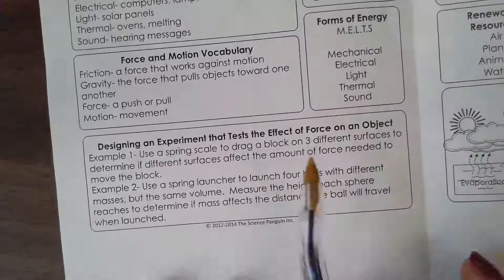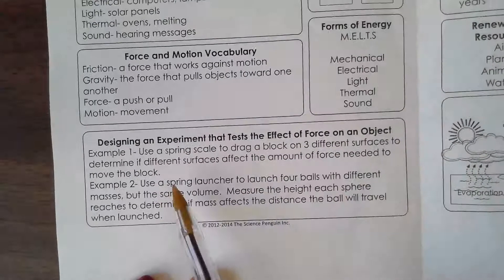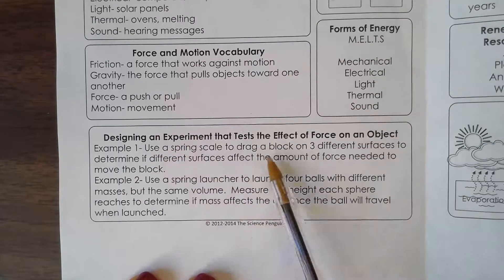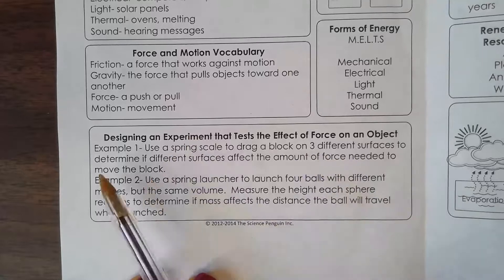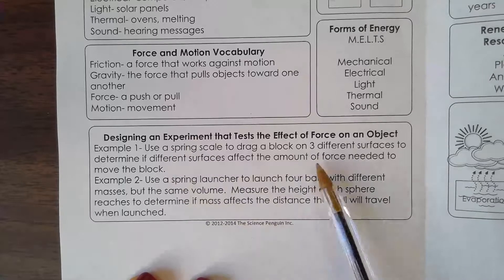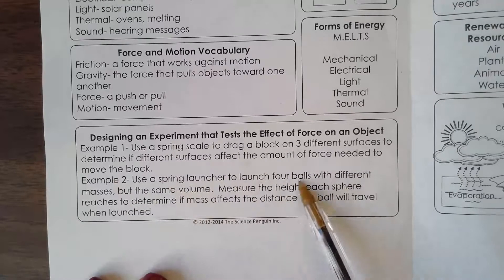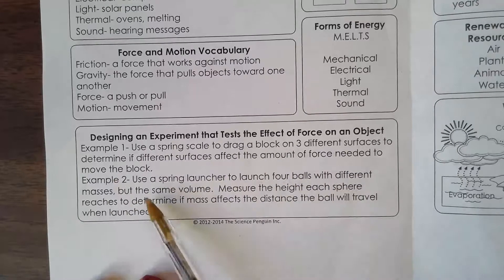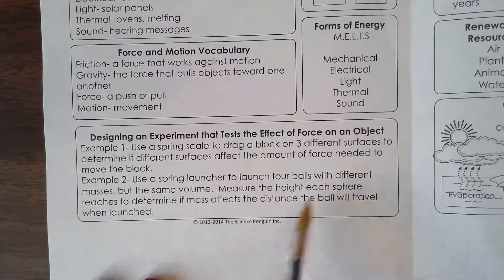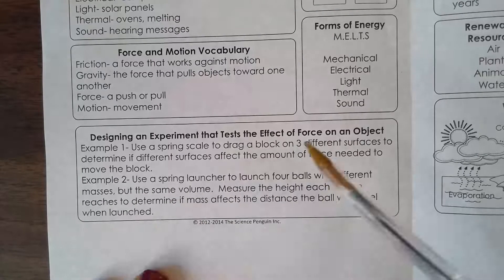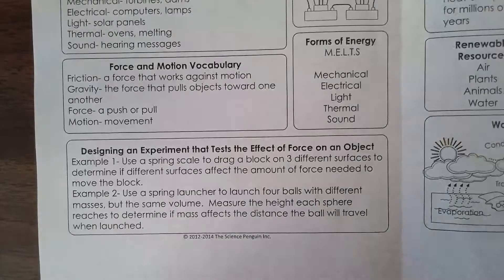Designing an experiment that tests the effect of force on an object. Use a spring scale to drag a block on three different surfaces to determine if different surfaces affect the amount of force needed to move the block. Example two: use a spring launcher to launch four balls with different masses but the same volume, and measure the height each sphere reaches to determine if mass affects the distance the ball travels when launched.